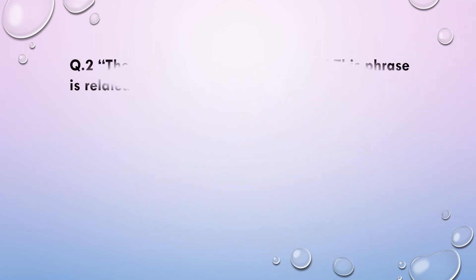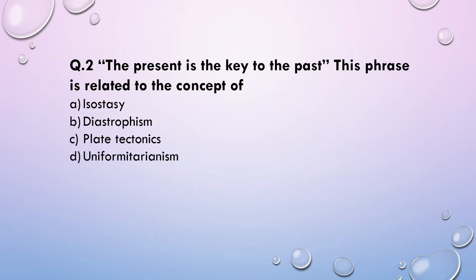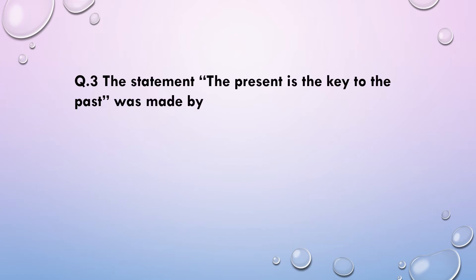The next question: 'The present is the key to the past' — this phrase is related to the concept of — (a) isostasy, (b) diastrophism, (c) plate tectonics, or (d) uniformitarianism. The answer of this question will be option D, uniformitarianism.